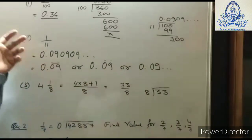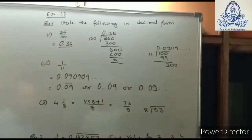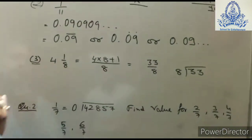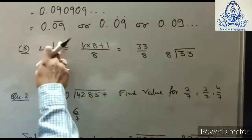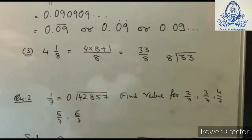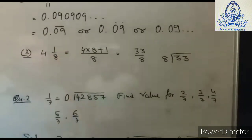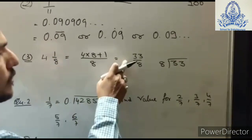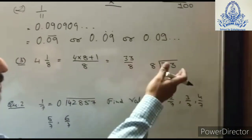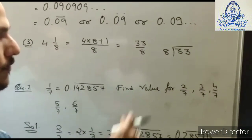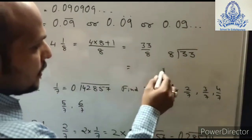The third question gives the mixed number 4 and 1/8. We first convert it to a vulgar fraction: multiply 4 by 8 and add 1, giving 33 upon 8. Then divide 33 by 8 using the division method to get the decimal answer.